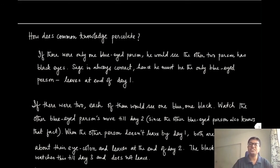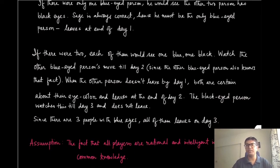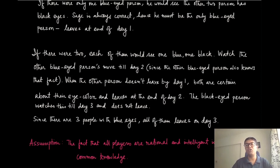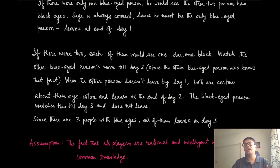Now with three blue-eyed people: each person sees two other blue-eyed people and thinks maybe their own eye color is black, so they wait until day 2 to see whether those two leave. When they don't leave on day 2, each person confirms their own eye color is also blue. All three people then leave the island simultaneously on day 3.